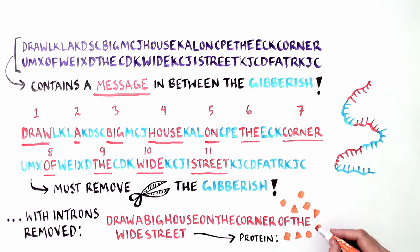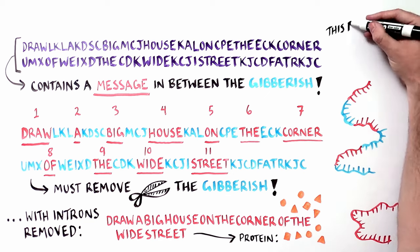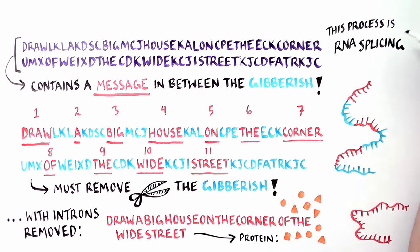The process of going from a full-length, unedited RNA instruction to a coherent message—'draw a big house on the corner of the wide street'—is called RNA splicing.